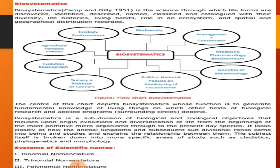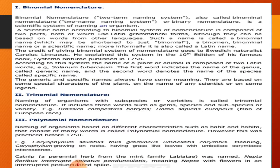The first part of scientific names involves three systems. The two-term naming system, also called binomial nomenclature or binary nomenclature, is a scientific system of naming organisms. A scientific name according to binomial nomenclature is composed of two parts.